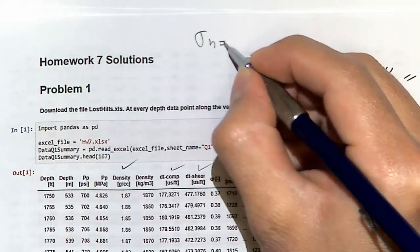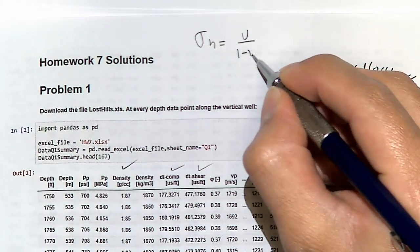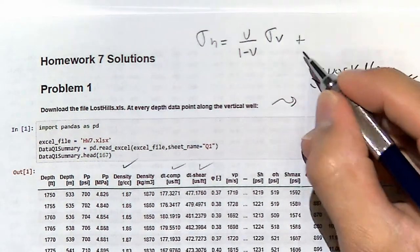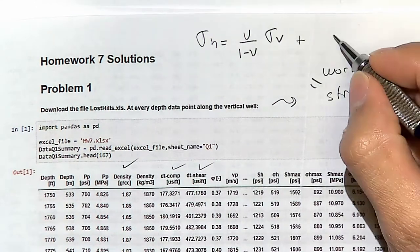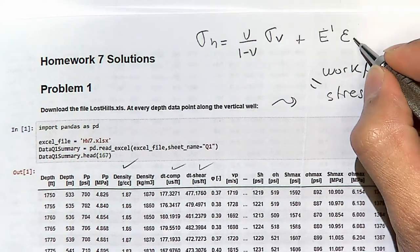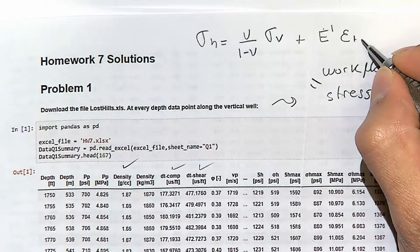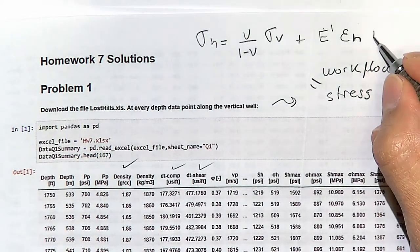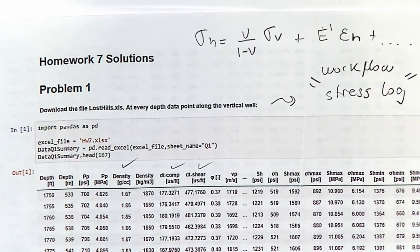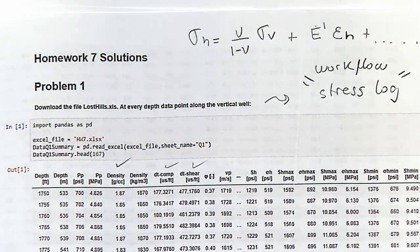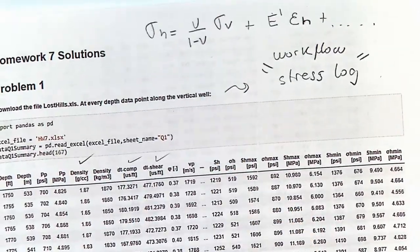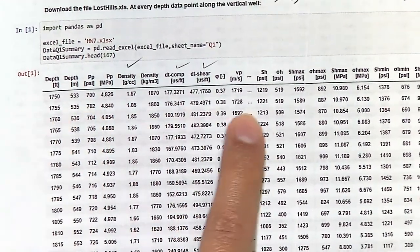The horizontal stress is given by this formula, which we use together with the tectonic strain component. We apply this now line by line — the assumption is that we have a layered medium and we apply this equation for each layer, calculating the stress according to that equation.